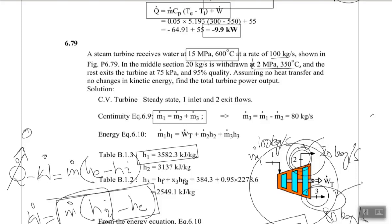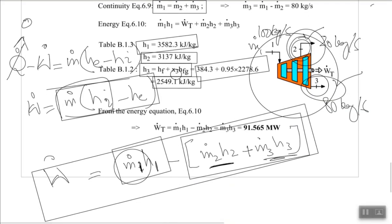For state 3 at 75 kPa with 95% quality, use h₃ = hf + x·hfg, where x = 0.95. Look up hf and hg at 75 kPa from the saturated steam table and compute h₃. Substituting all enthalpies and mass flow rates into the work equation gives a total turbine power output of 91.65 MW.